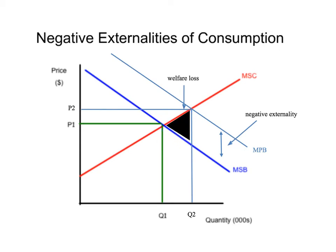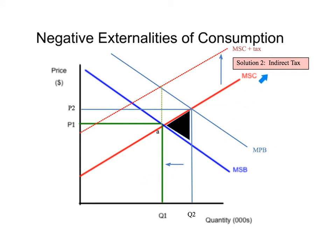One way the government can fix this problem is to implement an indirect tax on the suppliers of cigarettes. This is going to push the marginal social cost curve up by the amount of the tax, pushing the cost per unit of the cigarette upward. The hope is that you push the cost up enough so that the quantity consumed in the marketplace drops from Q2 back to Q1. The goal is point A, which is allocative efficiency — the socially optimal allocation of resources and the maximum social outcome.